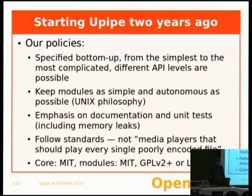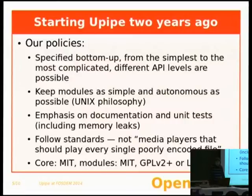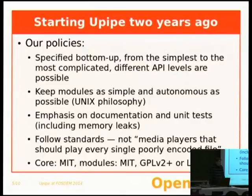We try to keep modules as simple and autonomous as possible — that's the Unix philosophy. That allows us to do very intensive unit tests, including checking through memory leaks with Valgrind. All our code goes through Valgrind. We also have an emphasis on documentation — you can see we have tutorials on our website, and not only Doxygen but also comprehensive documentation on the framework. One last thing very appreciated by professionals is that we try to follow standards as much as possible. We do not aim at playing every single malformed encoded file. If a file does not follow the spec, we may not play it, and we're happy with that.